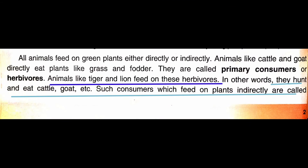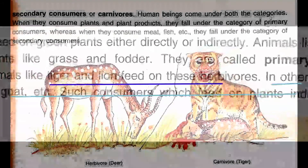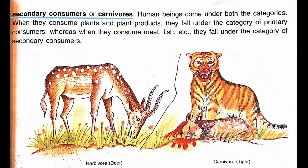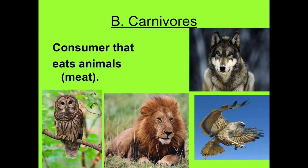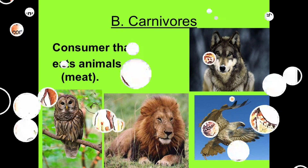Ab kuch aise animals bhi honge jo herbivore nahi honge — like tiger and lion. They hunt and eat cattle, goat, etc. Such consumers that feed on plants indirectly are called secondary consumers or carnivores. Those consumers that eat animals — their flesh — those are carnivores.